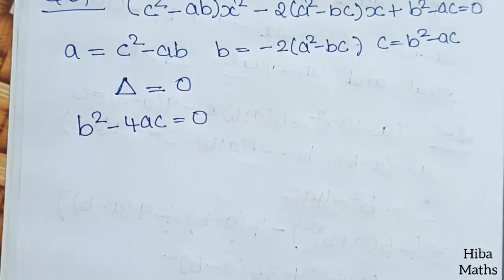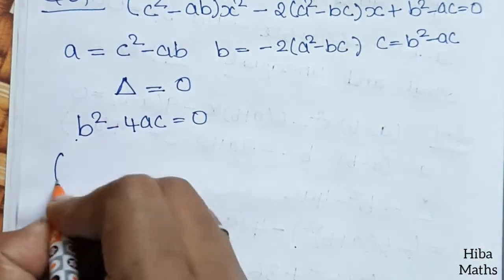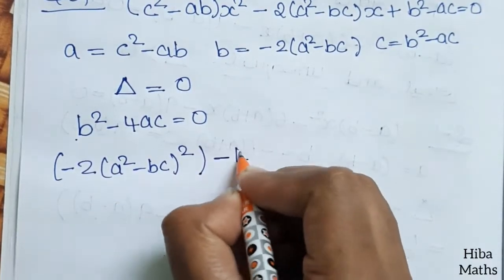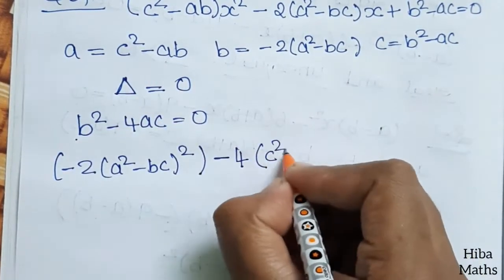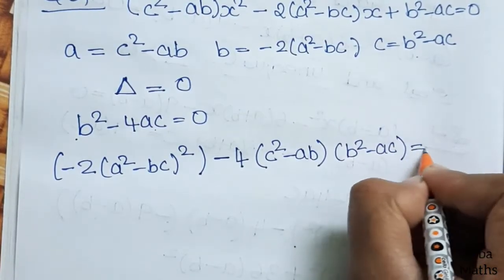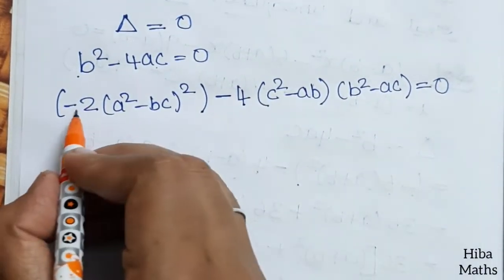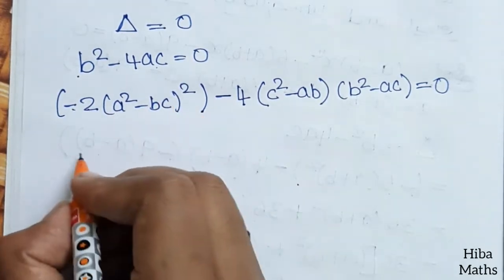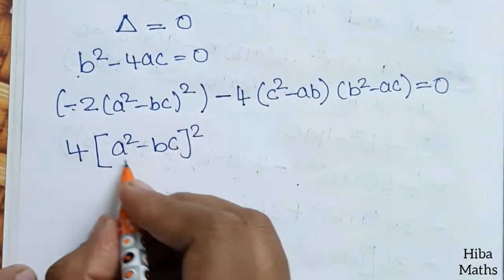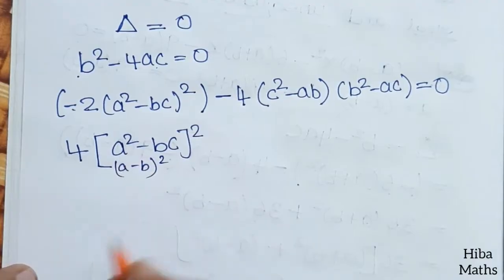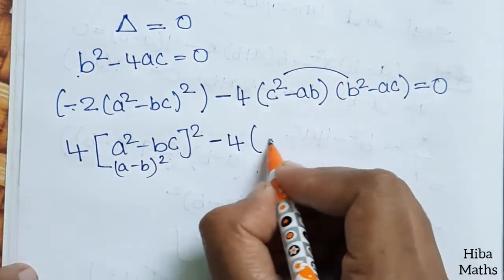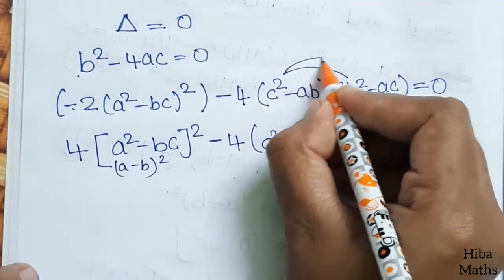Substituting the values: [-2(a² - bc)]² - 4(c² - ab)(b² - ac) = 0. Expanding: 4(a² - bc)² minus 4 into (c² - ab)(b² - ac) equals 0. So minus into b² gives us terms involving c²b².